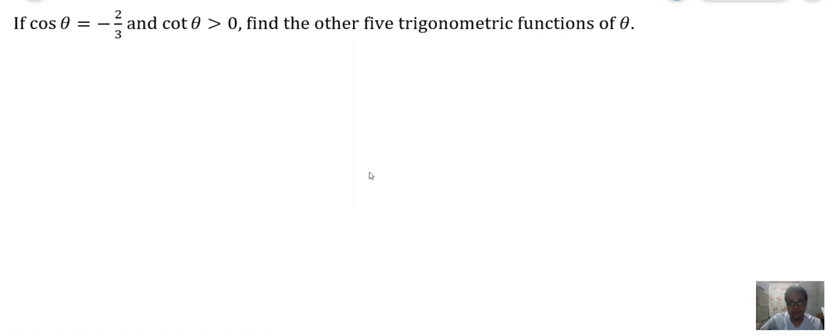Remember there are six trigonometric functions of θ. One of them is given: cos θ = -2/3, and we begin from there. Cosine of θ is negative 2 over 3. We know that cos θ = x/r based on our formulas.